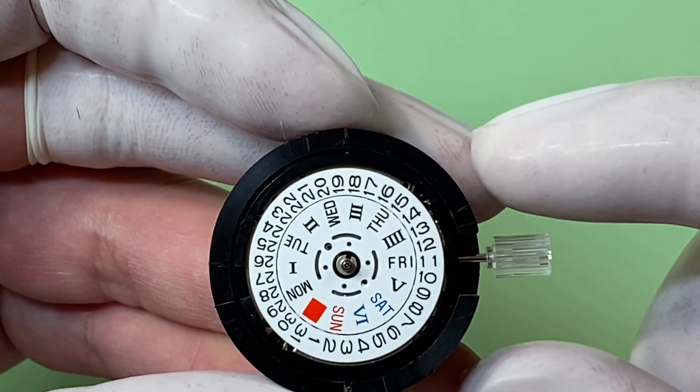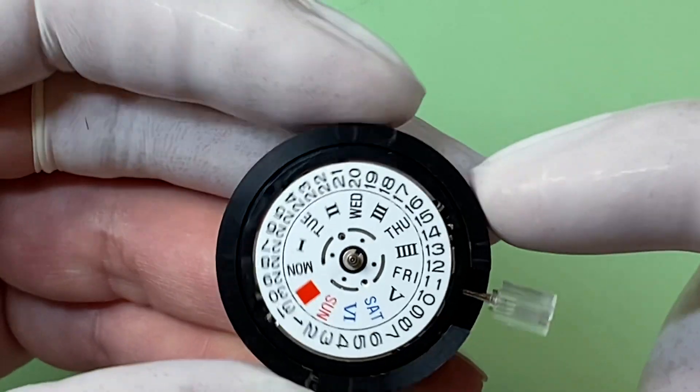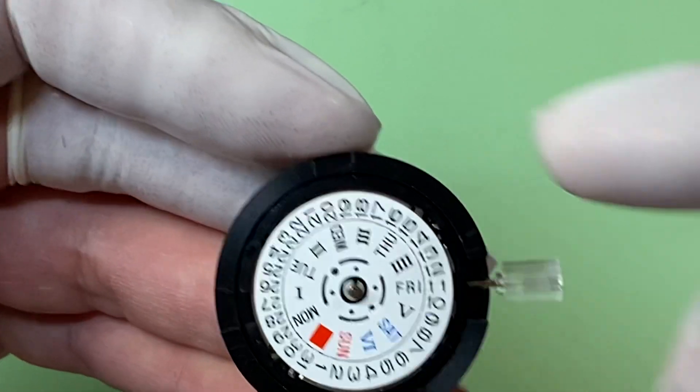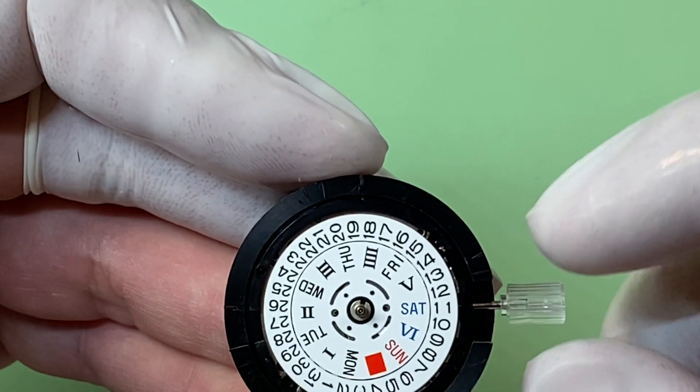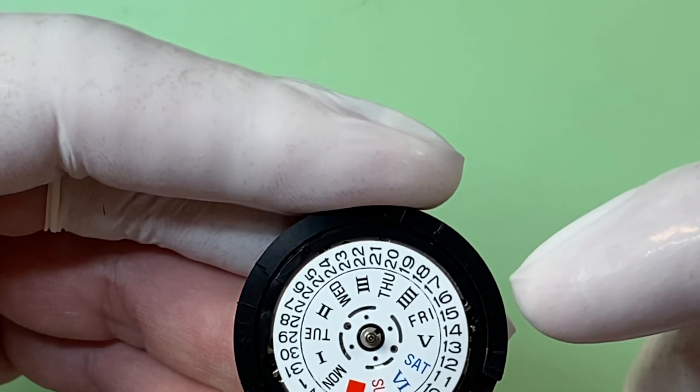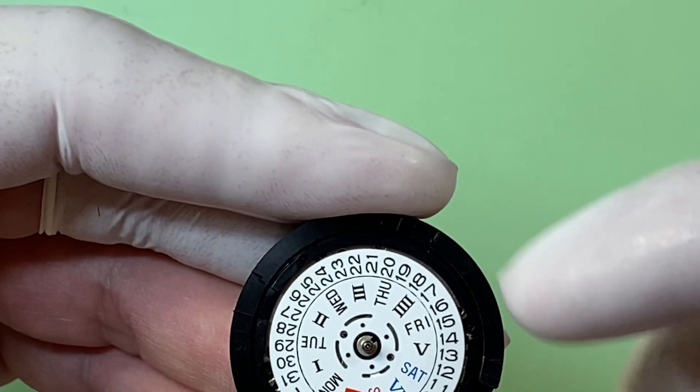That would be if it was in the three o'clock position as opposed to the four o'clock. When it's in the three o'clock position, you can see they're perfectly aligned, but at the four o'clock position, they're not.